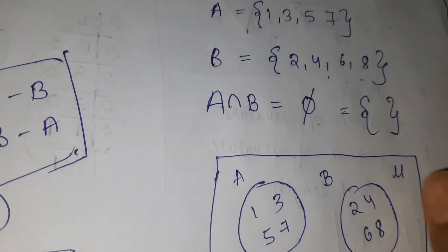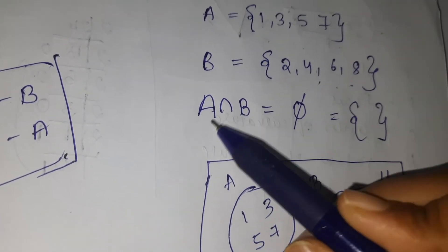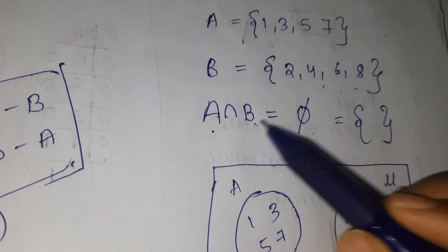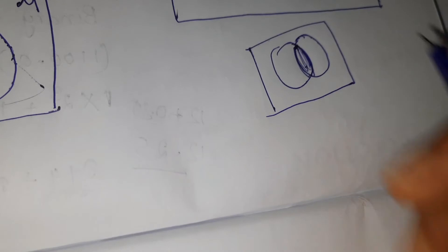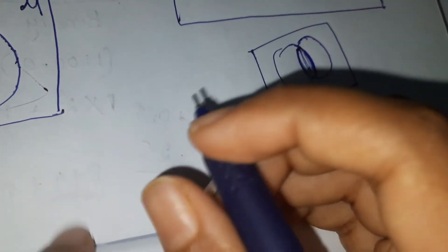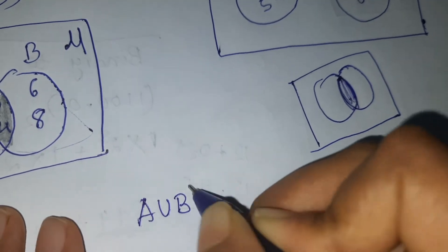So these are called disjoint sets. For disjoint sets, their intersection—the intersection of a disjoint set—is always phi. And here's an important formula. Remember, keep this in mind: A union B, n of A union B.